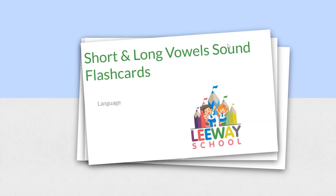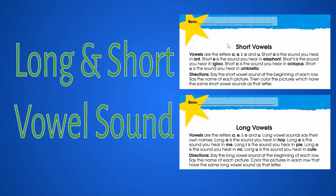Today we are going to learn short and long vowel sounds. What are vowels? Vowels are A, E, I, O, and U. Each vowel has two different sounds: a short sound and a long sound. Let's see what these sounds are.